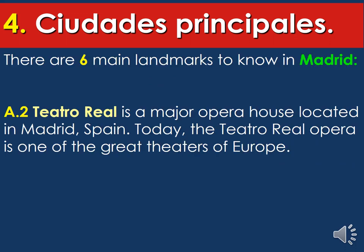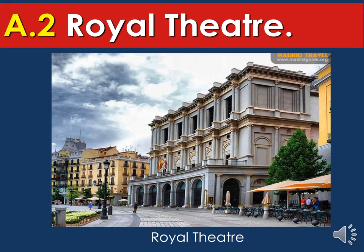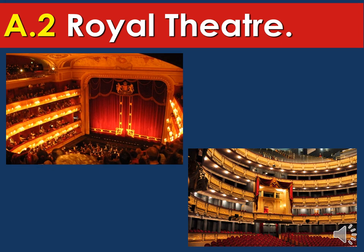The second landmark to know while visiting Madrid is Teatro Real, or Royal Theater. This is a major opera house located in Madrid, España. Today, the Teatro Real Opera is one of the greatest theaters of Europe. This theater remained closed during the dictatorship and didn't reopen until the monarchy came back into place. It's an old building, built in the 1900s. Every time the king and queen visit, they have a special balcony just for them — and not only in the theater, but also in the bullfight rings, they have a special balcony.